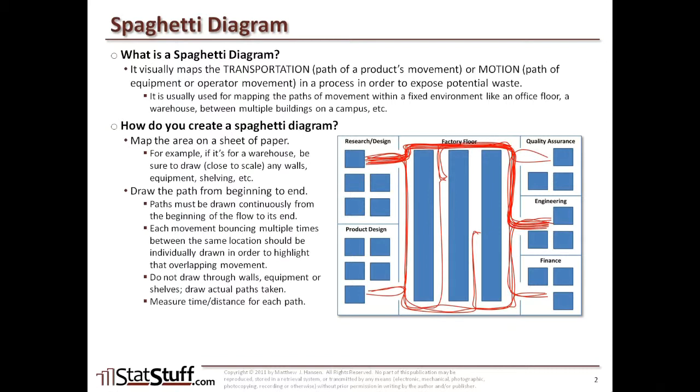Now after you do this you would also want to measure the time or distance for each of the paths that you think might be critical paths within this flow. You'd want to review this with your team. Make sure the team agrees that the paths drawn are accurate and that any overlapping path that occurs is potential waste.